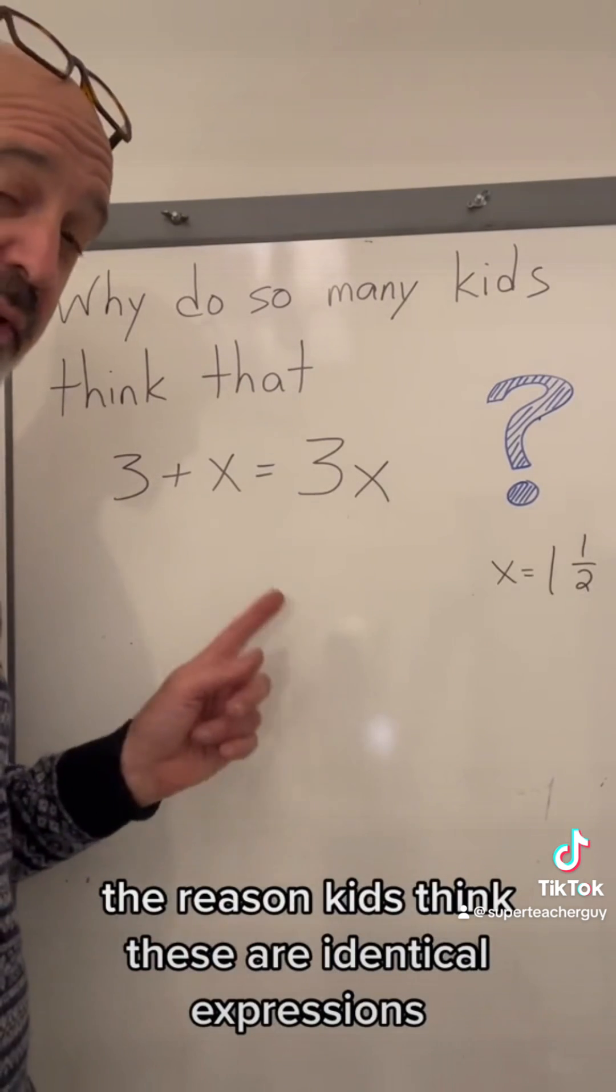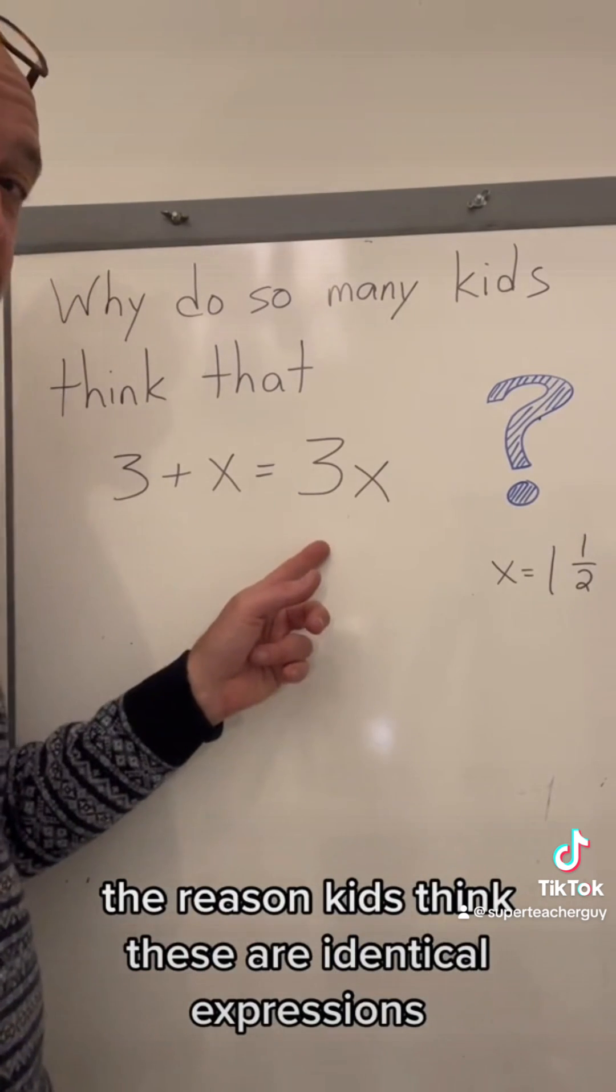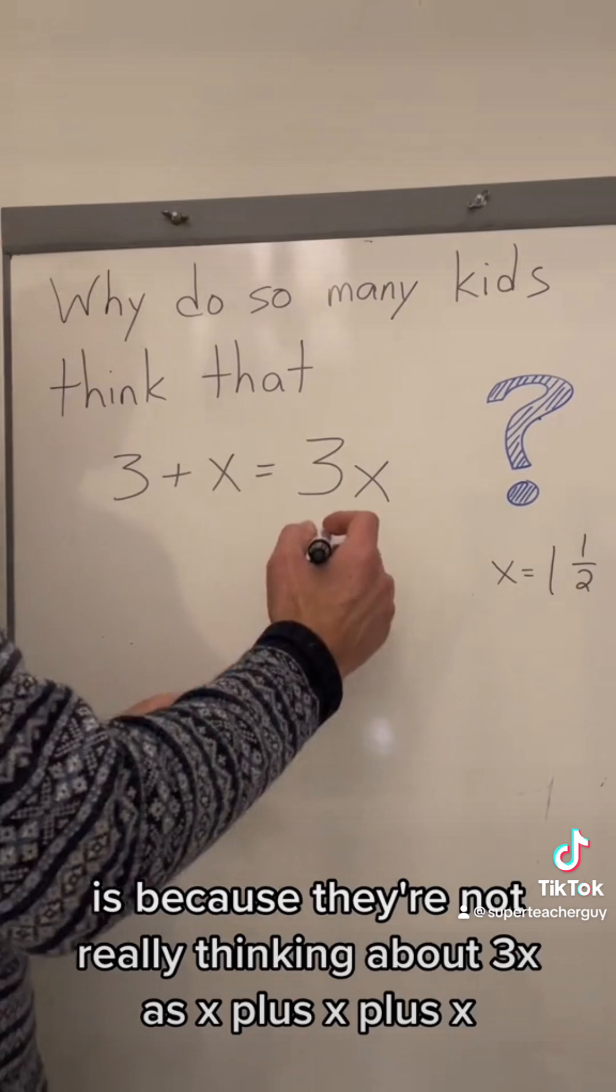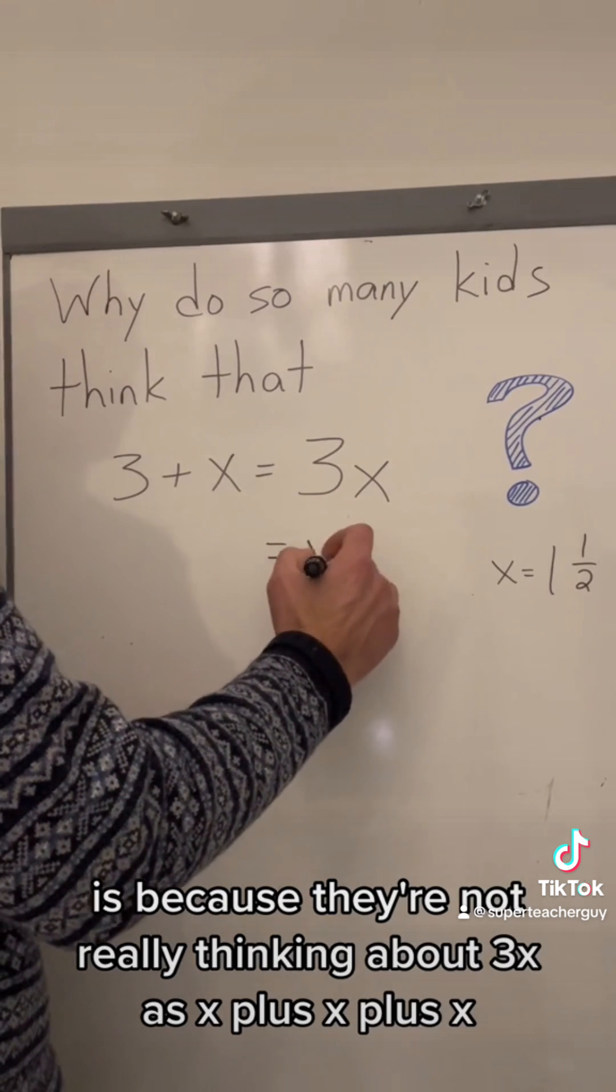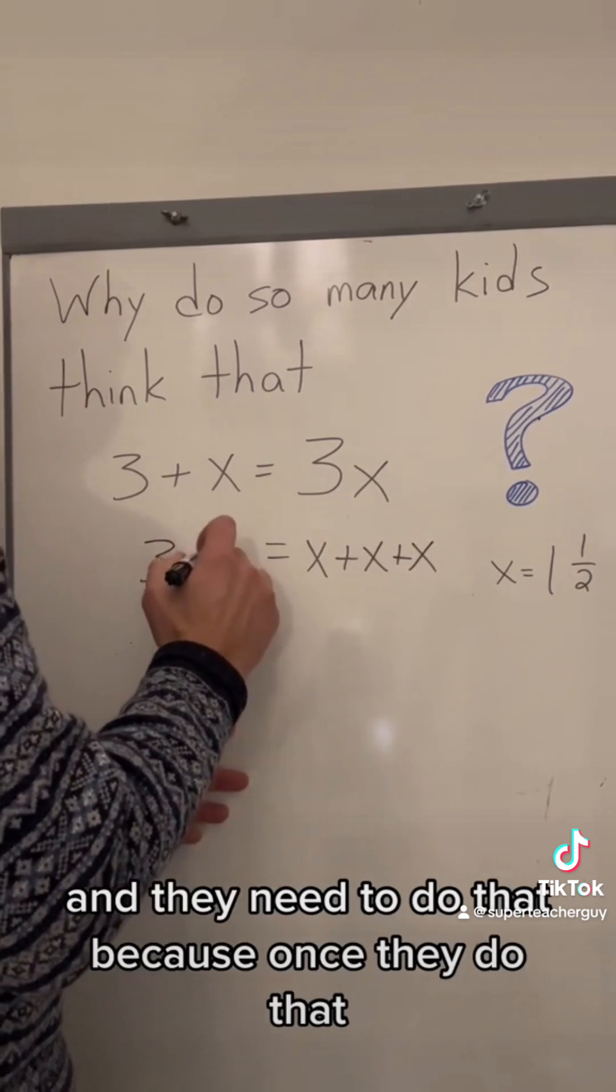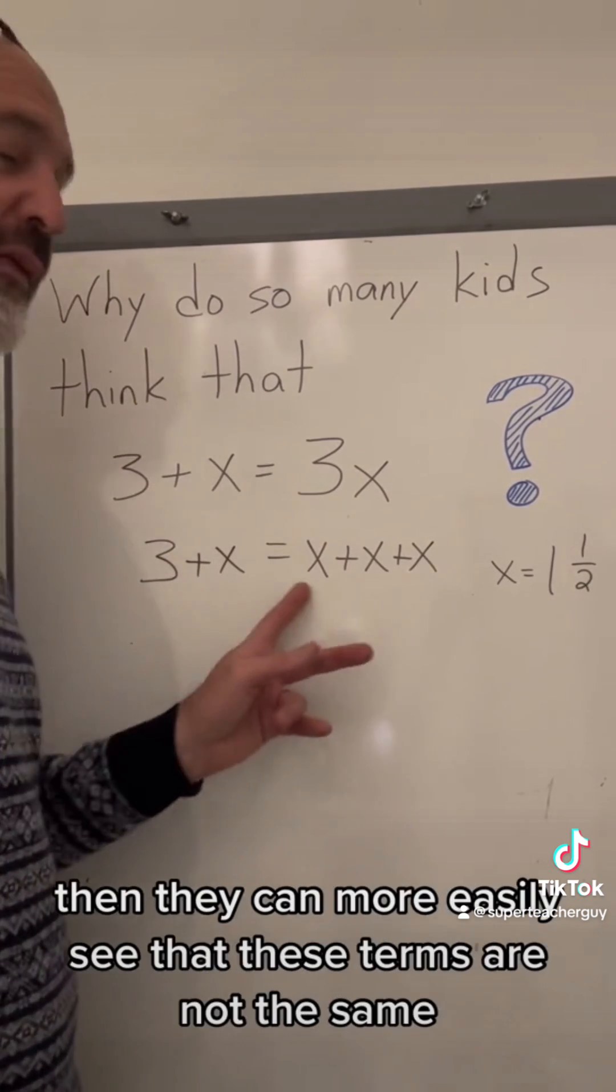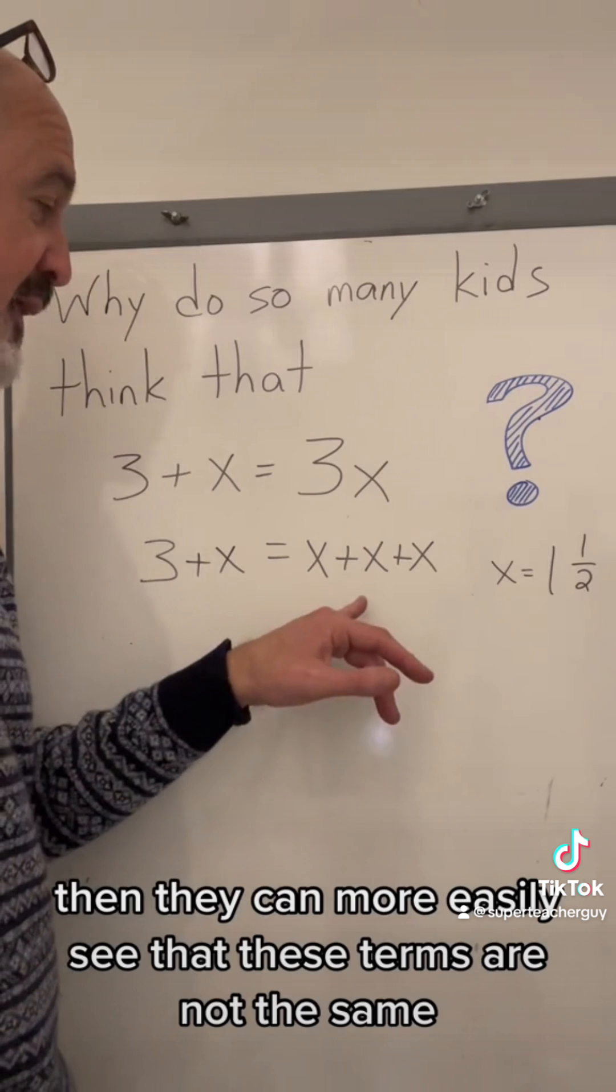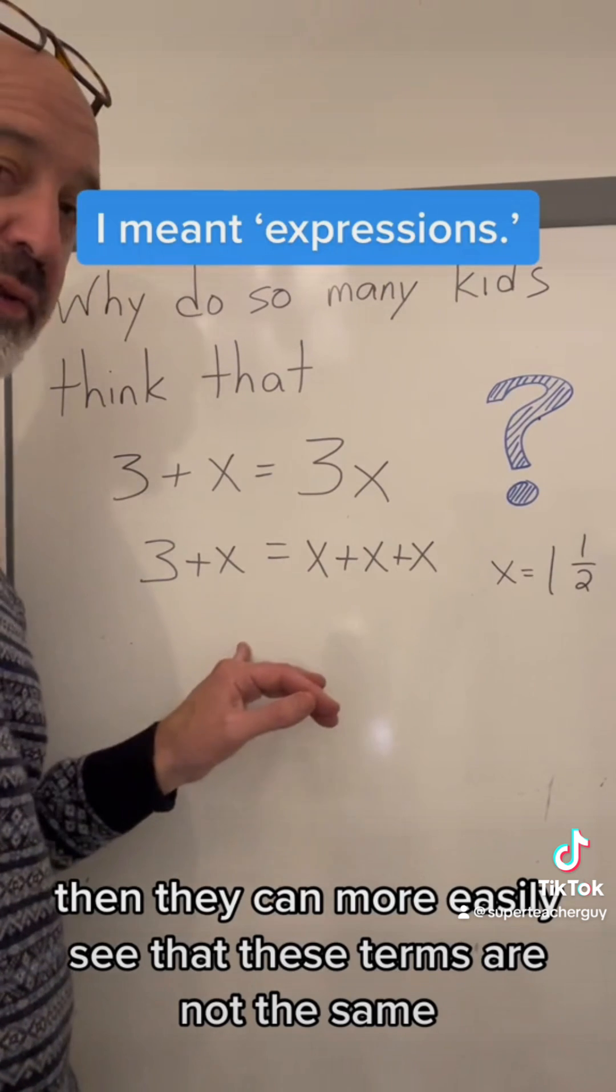The reason kids think these are identical expressions is because they're not really thinking about 3x as x plus x plus x. And they need to do that, because once they do that, then they can more easily see that these terms are not the same.